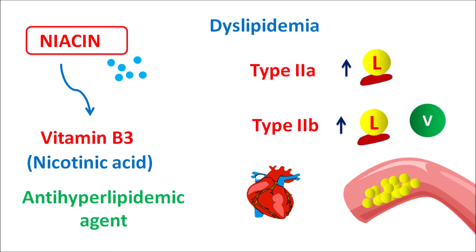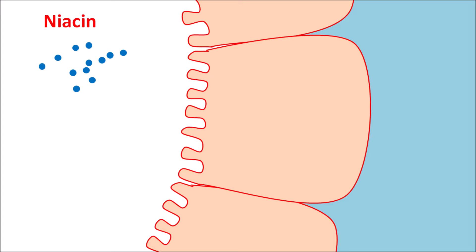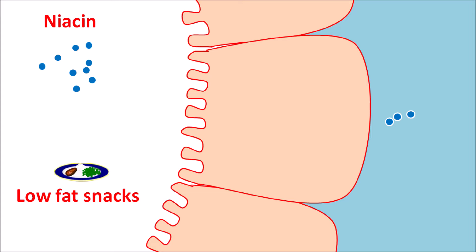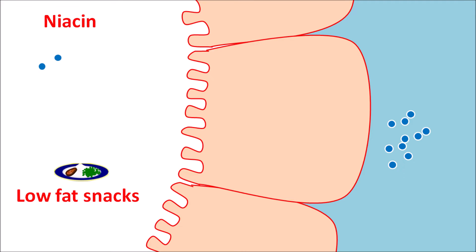In this video we will see how niacin acts, along with its important precautions, side effects, and dosage. Niacin has good absorption — around 60 to 80 percent of the drug is absorbed easily. To increase absorption and bioavailability, niacin should be administered along with a low-fat snack or meal.